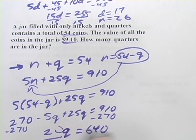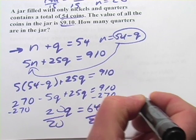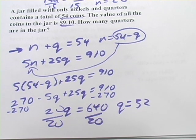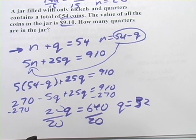And divide both sides by twenty. And we get q equals thirty-two. So the number of quarters in that jar is thirty-two. So that's a little bit of work with coin problems.